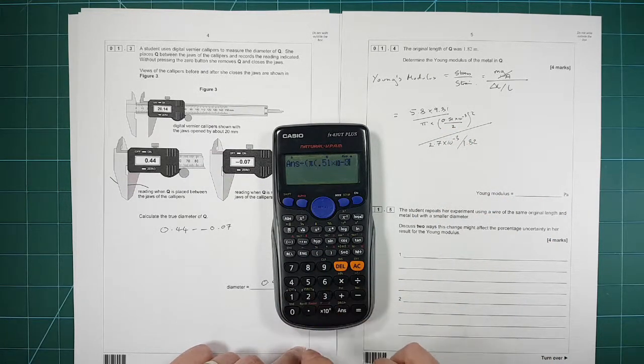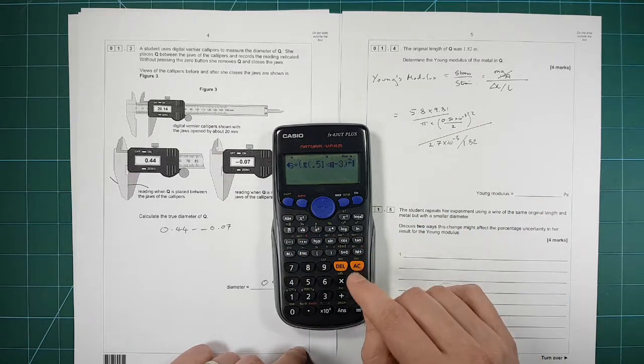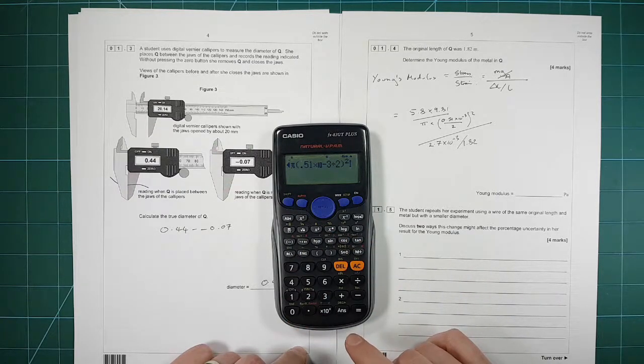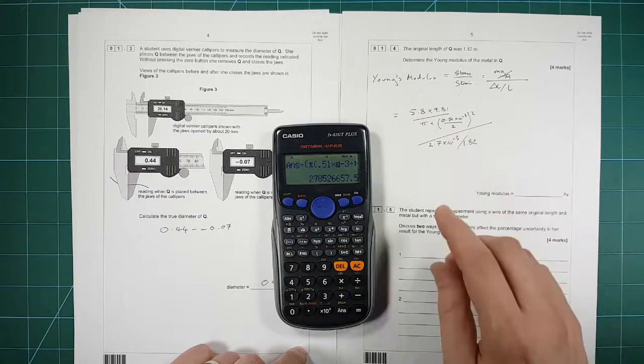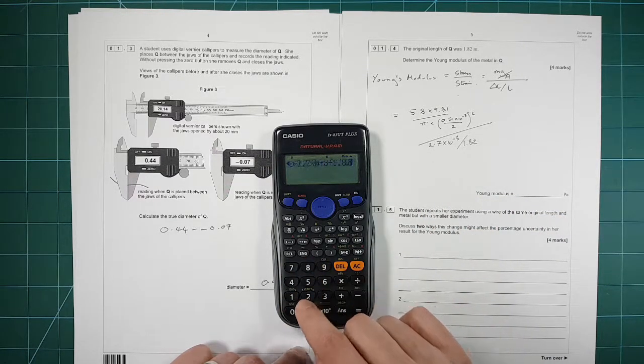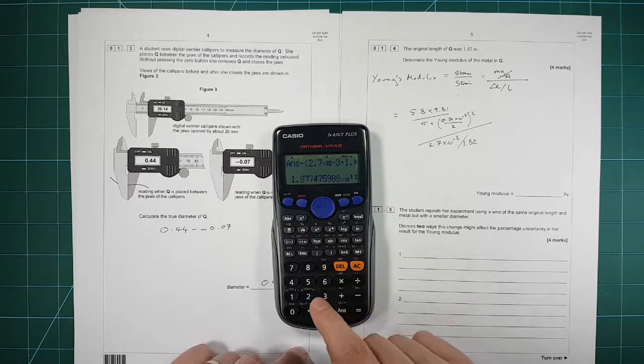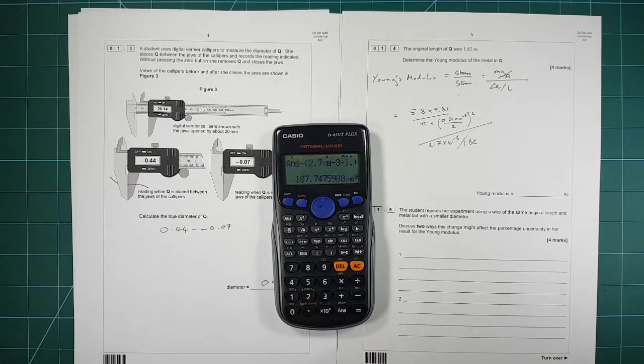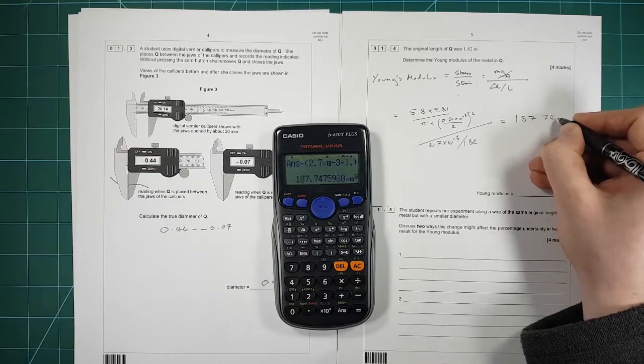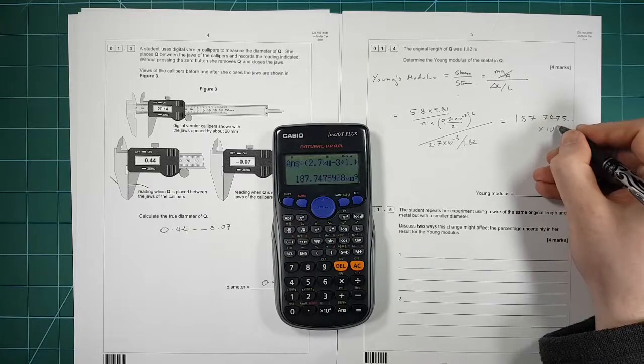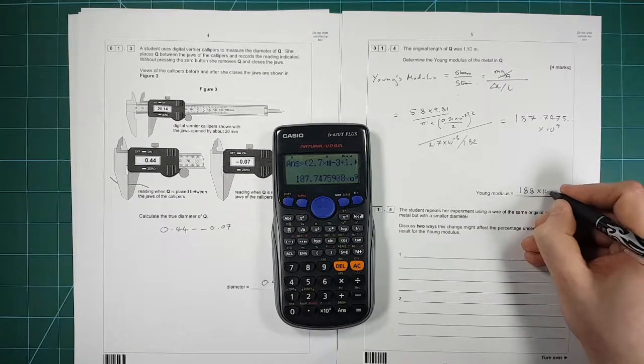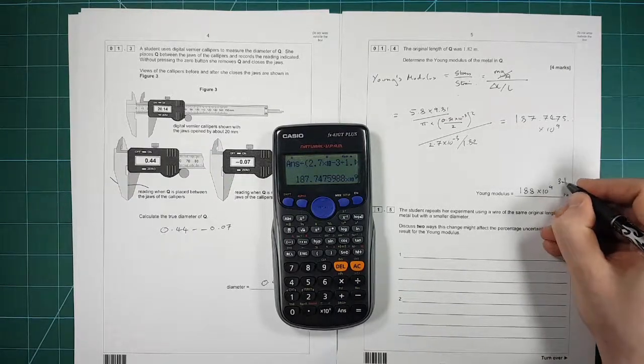Then we need to divide that whole thing by the change in length, which was 2.7 times 10 to the minus 3, from the previous question, and that in turn is divided by the original length, which is 1.82. So that's a big calculation. You can do it in multiple steps. I'm going to put it all in a few separate steps just to break it down. So 5.8 times by 9.81, then I'm going to divide that by pi times by 0.51 times 10 to the minus 3 divided by 2 squared.